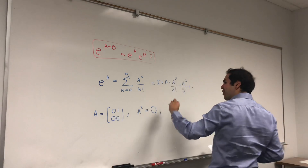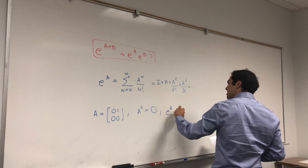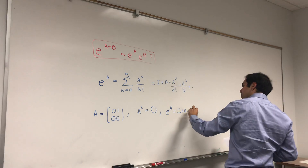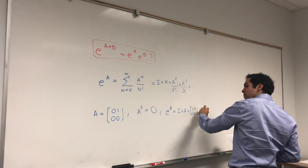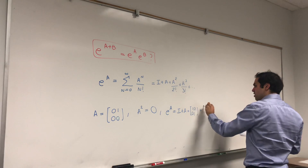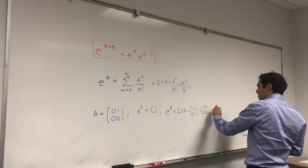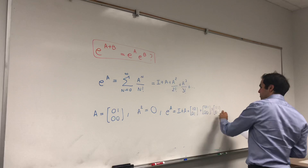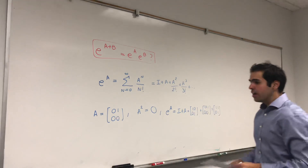So e to the A is I plus A — kind of like e-i-e-i-o, sort of. That's just [[1,0],[0,1]] plus [[0,1],[0,0]], and we get [[1,1],[0,1]]. This is e to the A.